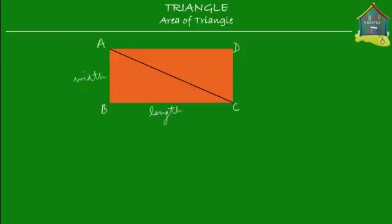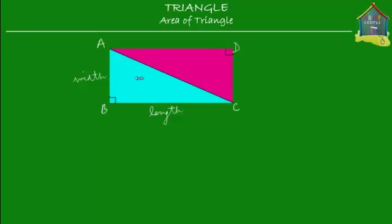Here is my first triangle, and here is another triangle. So this rectangle is made of two equal triangles. To be more specific, this is a right angle triangle, and so is this. This is triangle 1, ABC, and this is triangle 2, ADC. So these are two triangles which together make one rectangle.